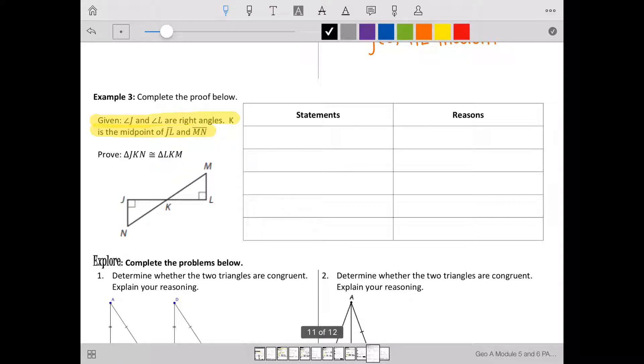Let's write our given information in the top. Angle J and angle L are right angles.